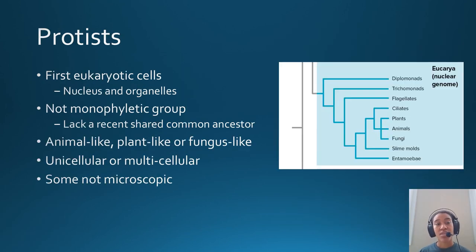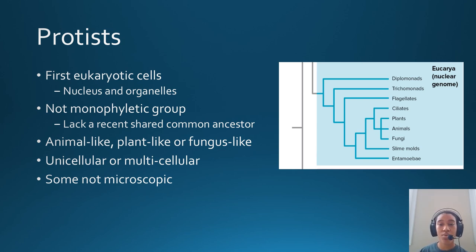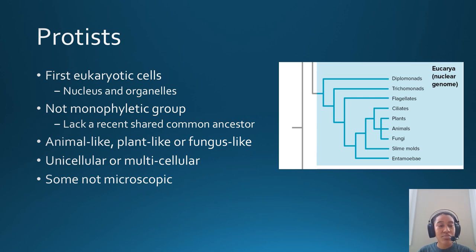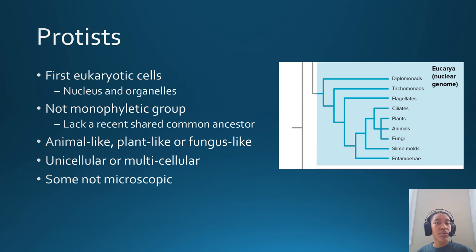Next we'll move on to protists. Protists are credited as the first eukaryotic cells — fossils of protists have a nucleus and organelles — but protists is not a monophyletic group. There is no one recent common ancestor for all protist groups; you have to go very far back to find one. Protists have historically been considered kind of like the garbage can of classifications — if it wasn't bacteria, archaea, animal, plant, or fungus, people just said it's a protist. This grouping contains many organisms that aren't even closely related to one another.